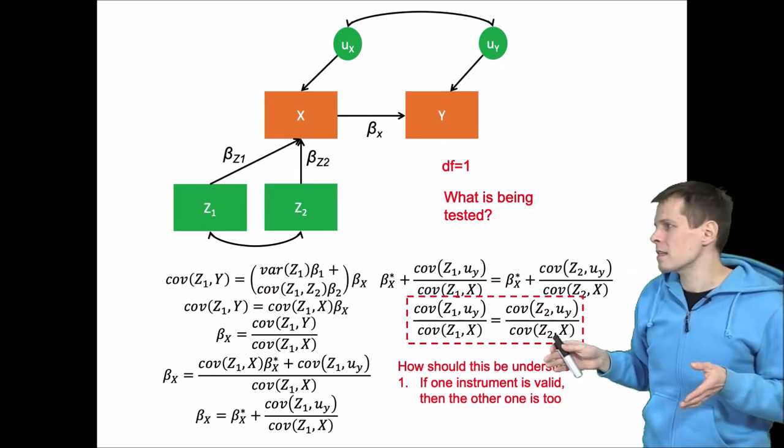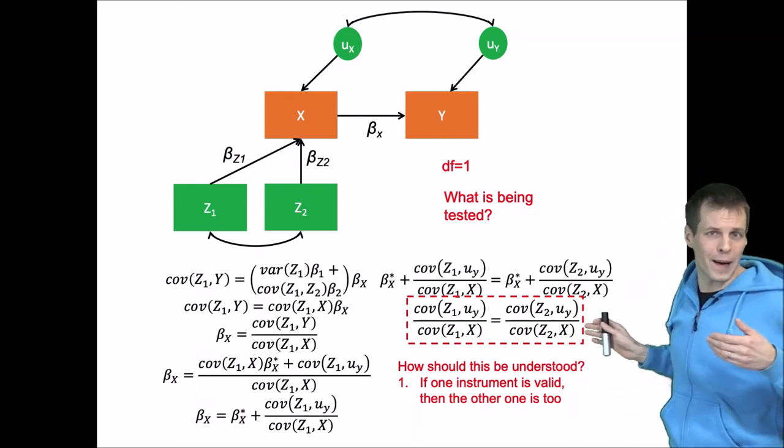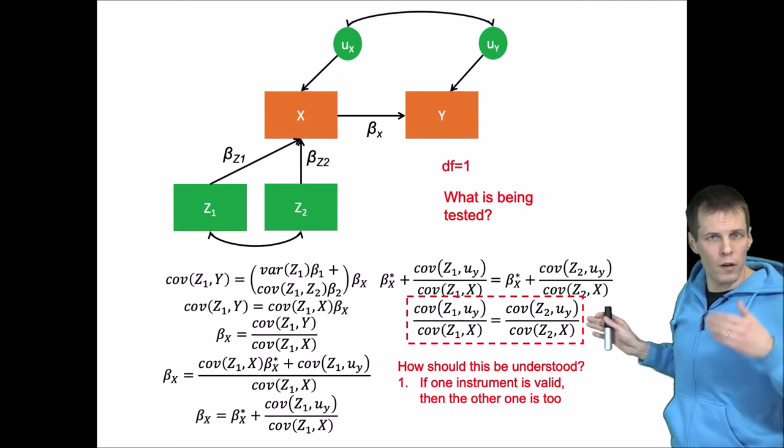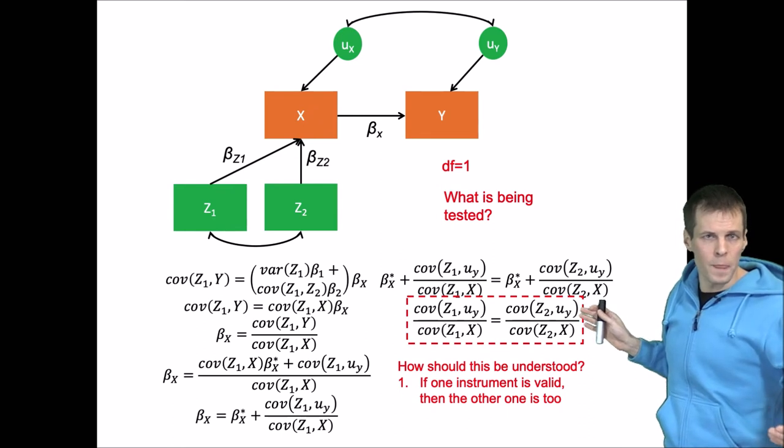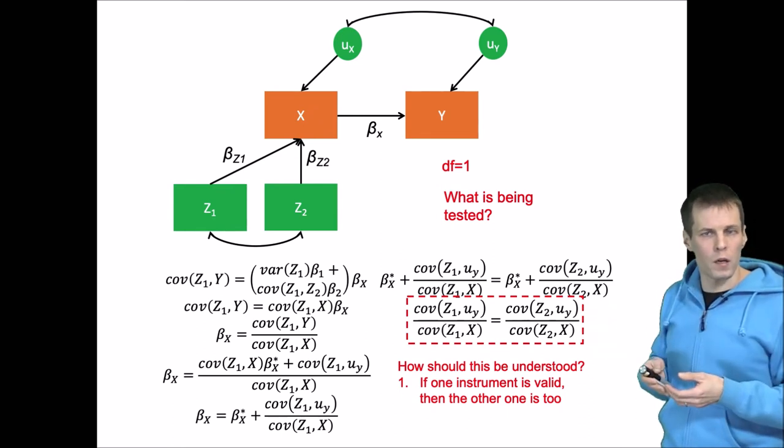And then we can test if the others are uncorrelated as well. So we can basically test if these instruments are equally valid. And if we know that one of them is valid, then if we know that the others are equally valid, then we know that they all are equally valid.